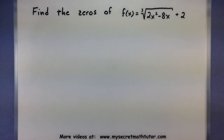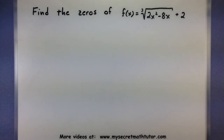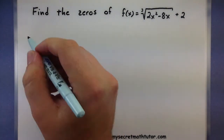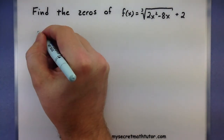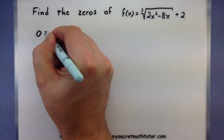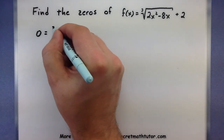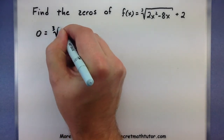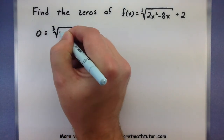In this next example, I want to find the zeros of the cubed root of 2x squared minus 8x plus 2. Since we're finding the zeros, let's go ahead and set all of this equal to 0 and solve.